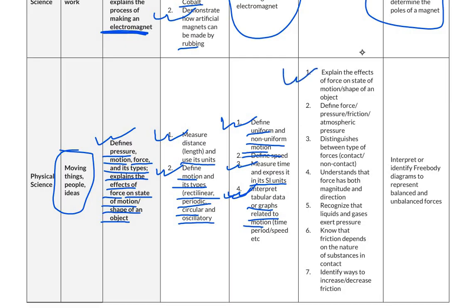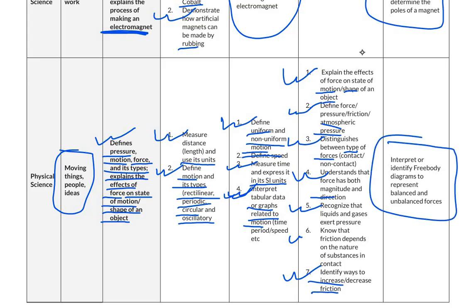For proficient level, students explain the effects of force on the state of motion or shape of an object, define force, pressure, friction and atmospheric pressure, distinguish between types of forces (contact or non-contact), understand that force has both magnitude and direction, recognize that liquids and gases exert pressure, know that friction depends on the nature of substance in contact, and identify ways to increase or decrease friction. For advanced level, questions involve interpreting or identifying free body diagrams to represent balanced and unbalanced forces.